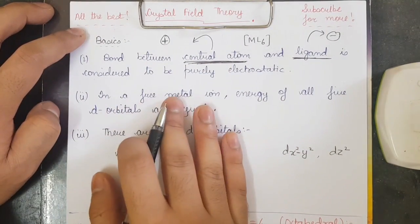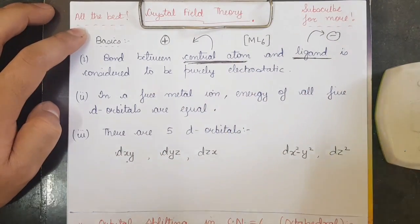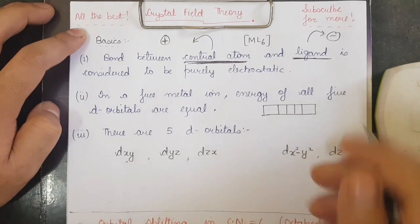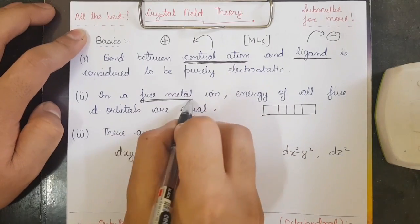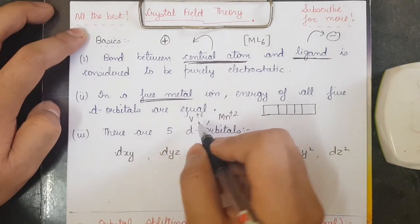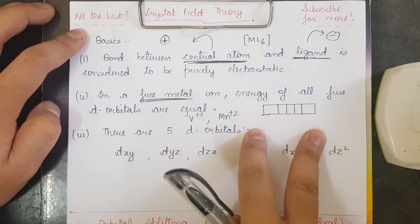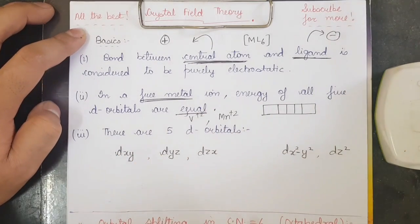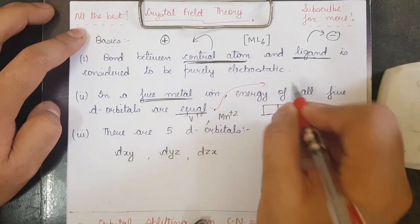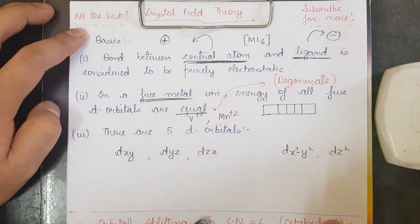The second basic: in a free metal ion, the energy of all five d-orbitals is equal. For example, in Mn²⁺ or V²⁺, the energy of all five d-orbitals is the same — there is no difference in energy. These orbitals are also known as degenerate orbitals, meaning they have the same energy.